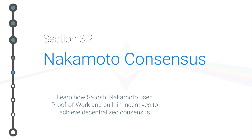Hey everyone, welcome to section 3.2 on Nakamoto Consensus, where we're going to be learning about how Satoshi Nakamoto used proof of work and built-in incentives inside of Bitcoin in order to achieve decentralized consensus.